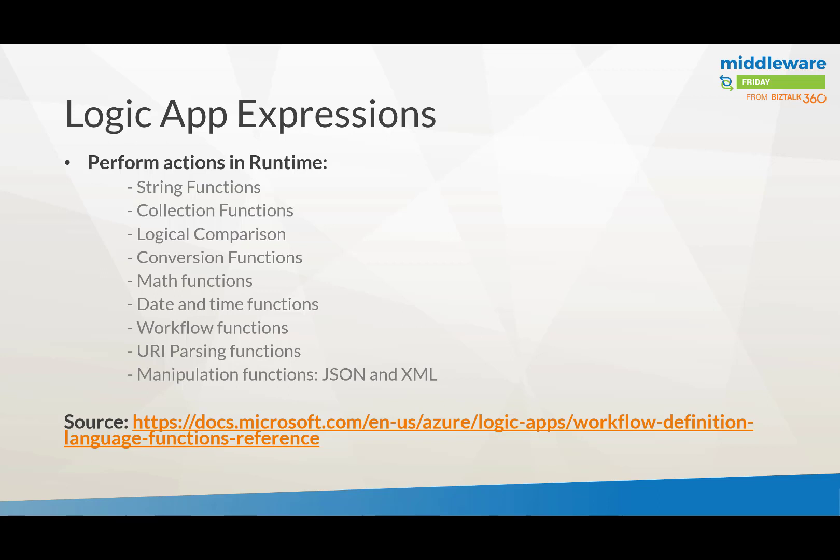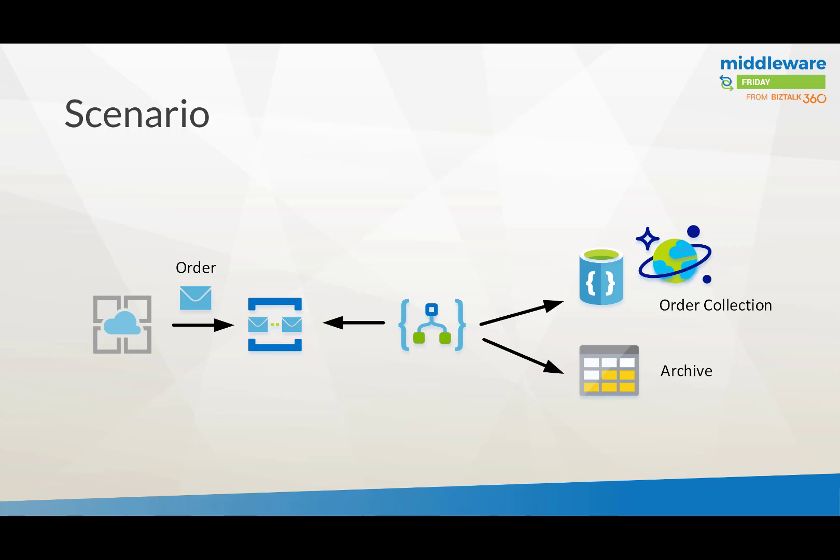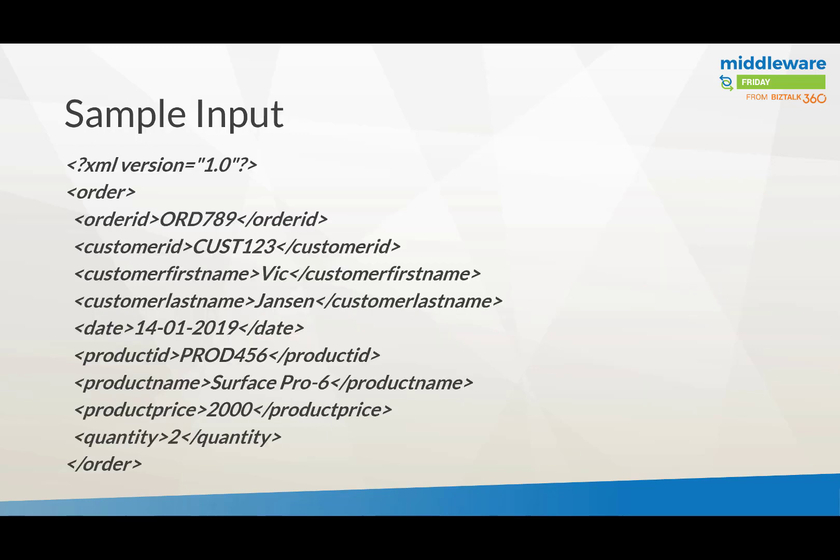You can find complete documentation for Logic App function expressions on the Microsoft documentation site. Now let's look at a scenario where you have a website hosting an app service taking an order. The order ends up in a Service Bus queue, a Logic App listens to that queue, picks up the message, does some manipulation with the order, and puts it into an orders collection inside a Cosmos DB instance. It will also archive that message to storage. The sample input is an XML message with an order ID, name, date, etc.